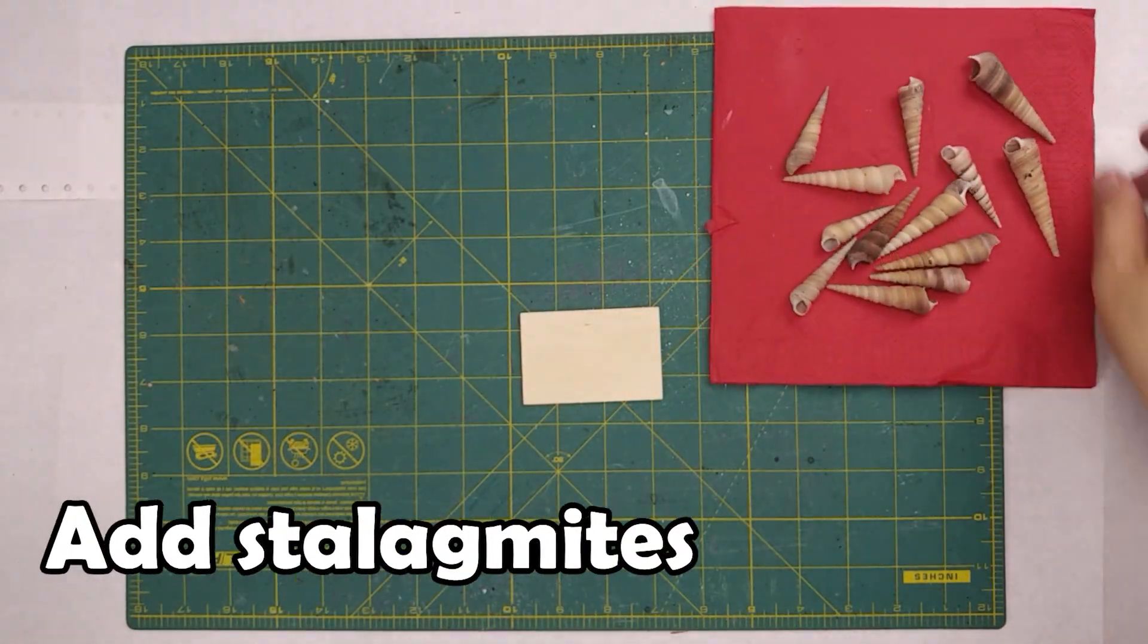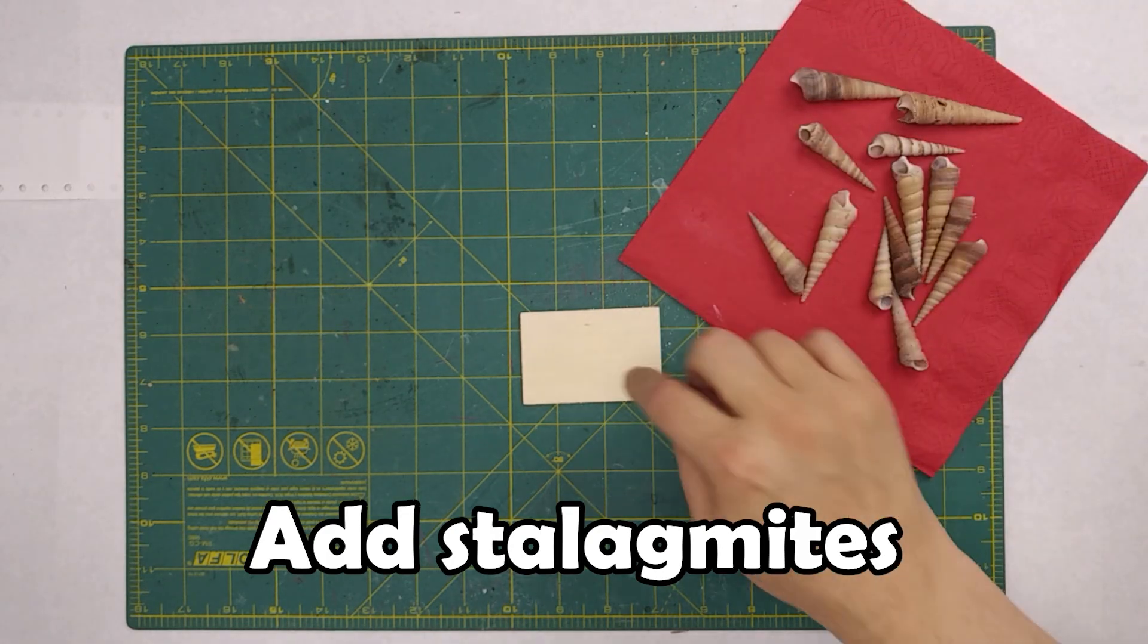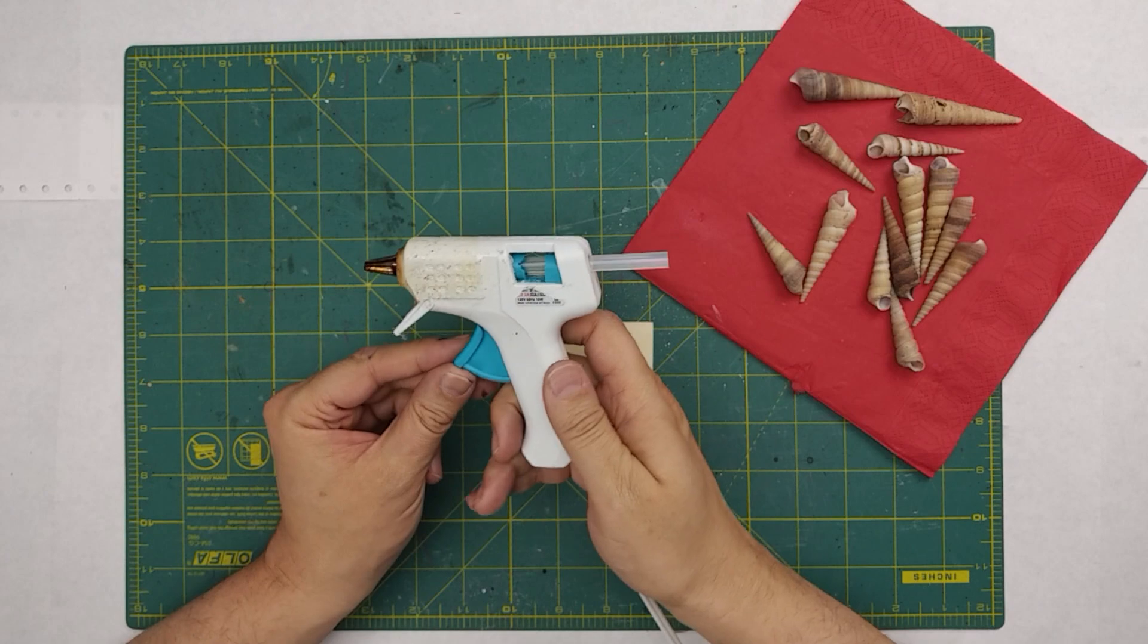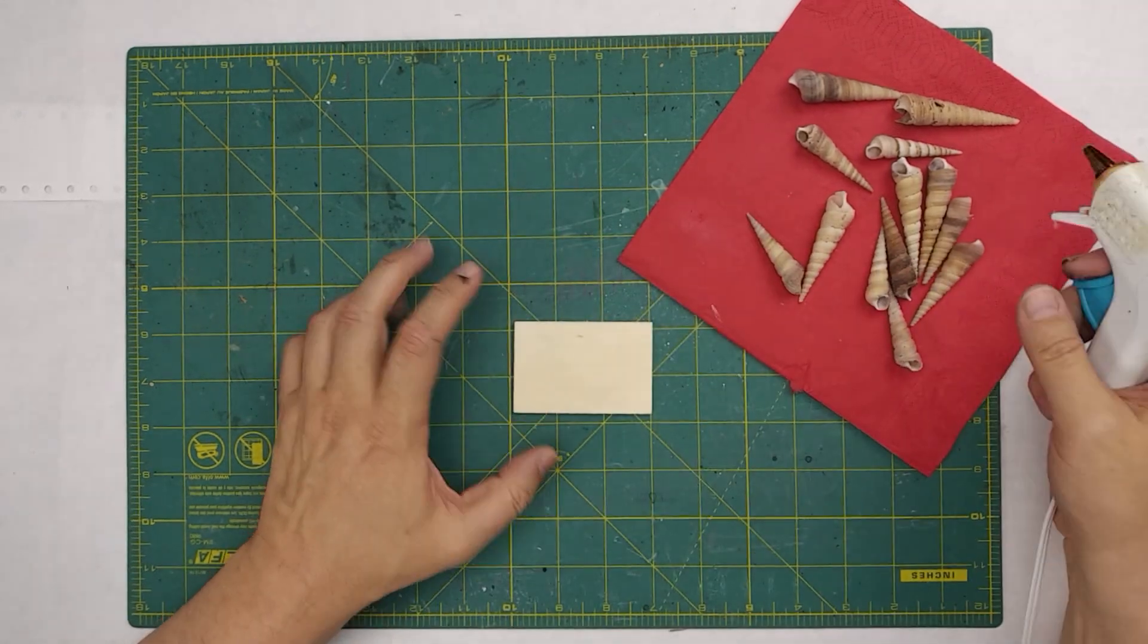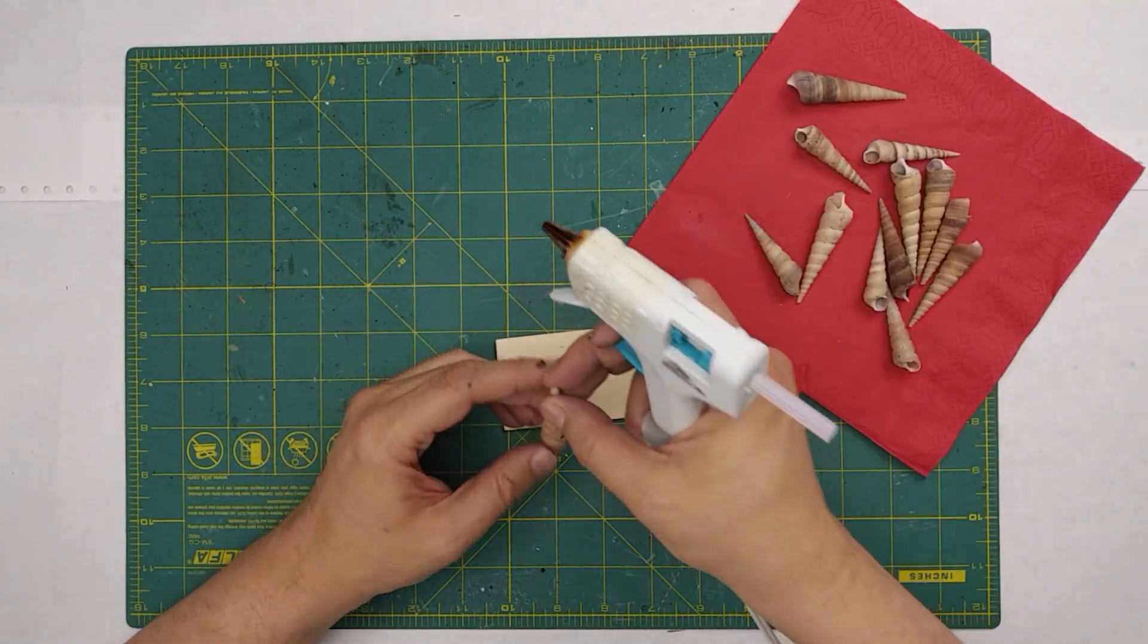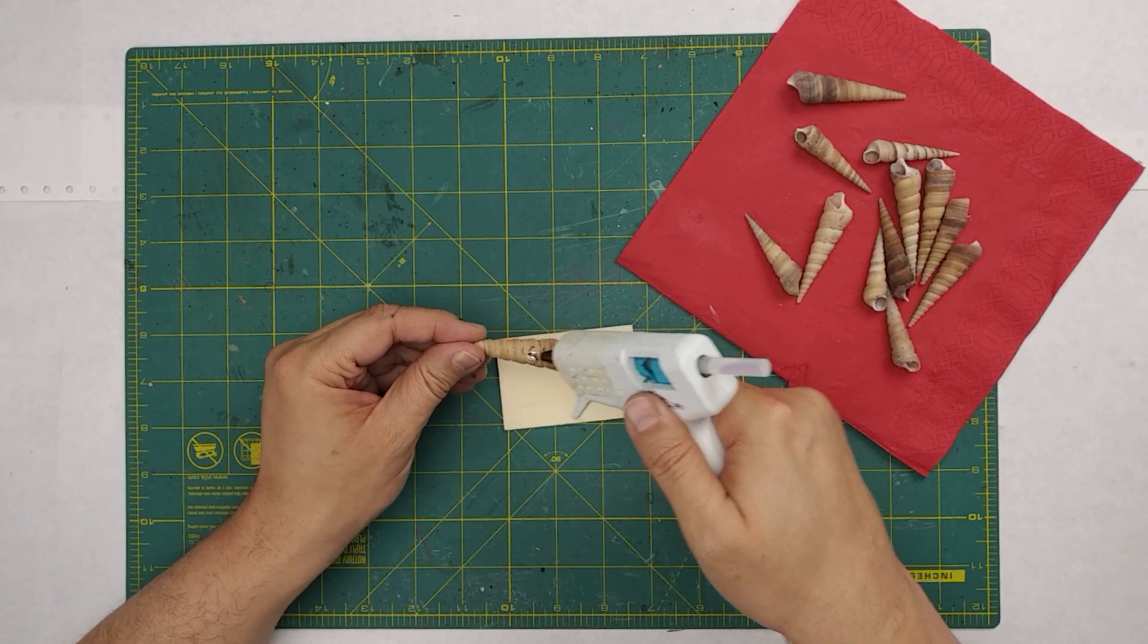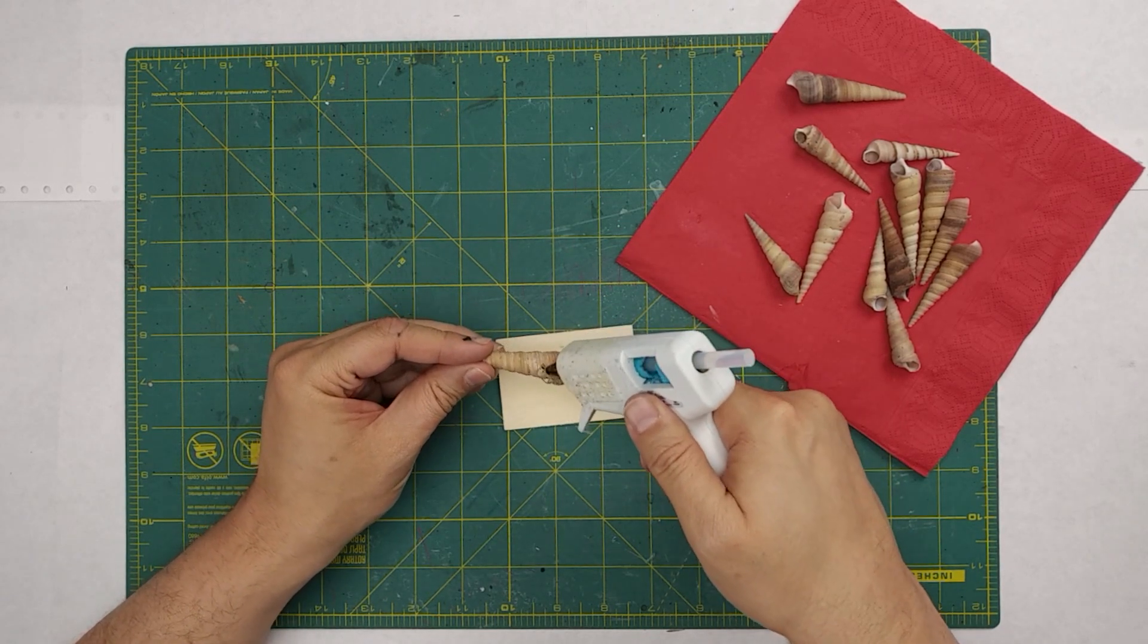For our second episode of the Gamesmith, we're going to be using a simple glue gun to attach these seashells to this wooden base. I discovered in making the first set of stalagmites that it's best to apply as much glue as you can to the shell and then let gravity pull it down to the surface and it'll stick in place.